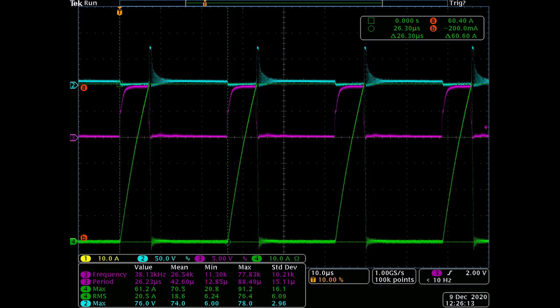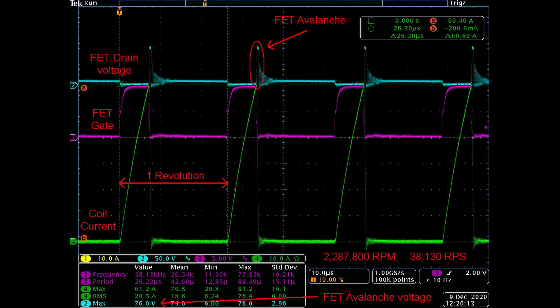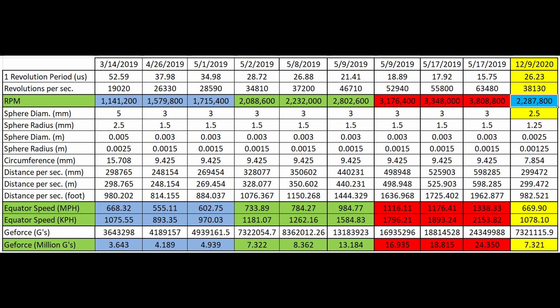Here is the coil current in green, FET gate in red, drain voltage in blue. Current and past records.